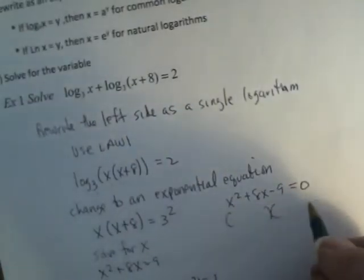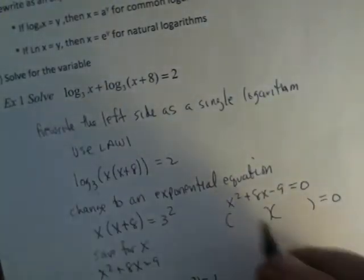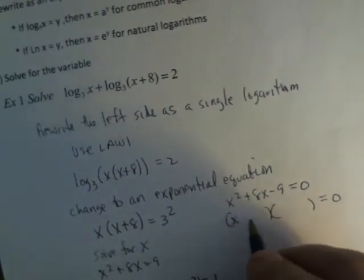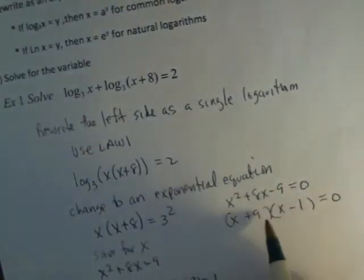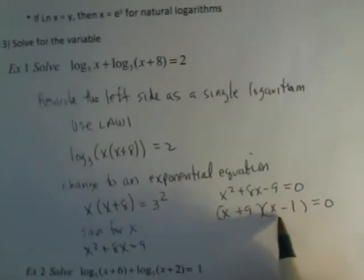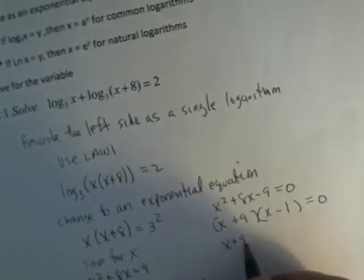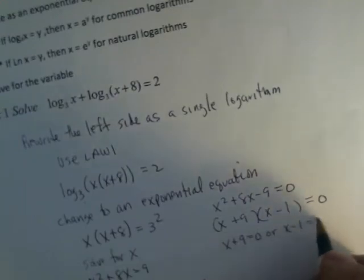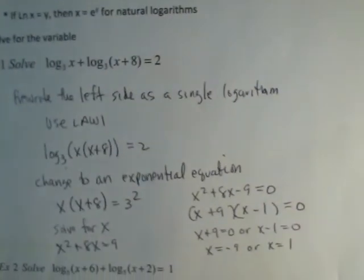Now I've got to factor. So if I factor, I need factors of negative 9 with a difference of positive 8, which are 9 and negative 1. Then I solve. And I get x is negative 9 or x is 1.